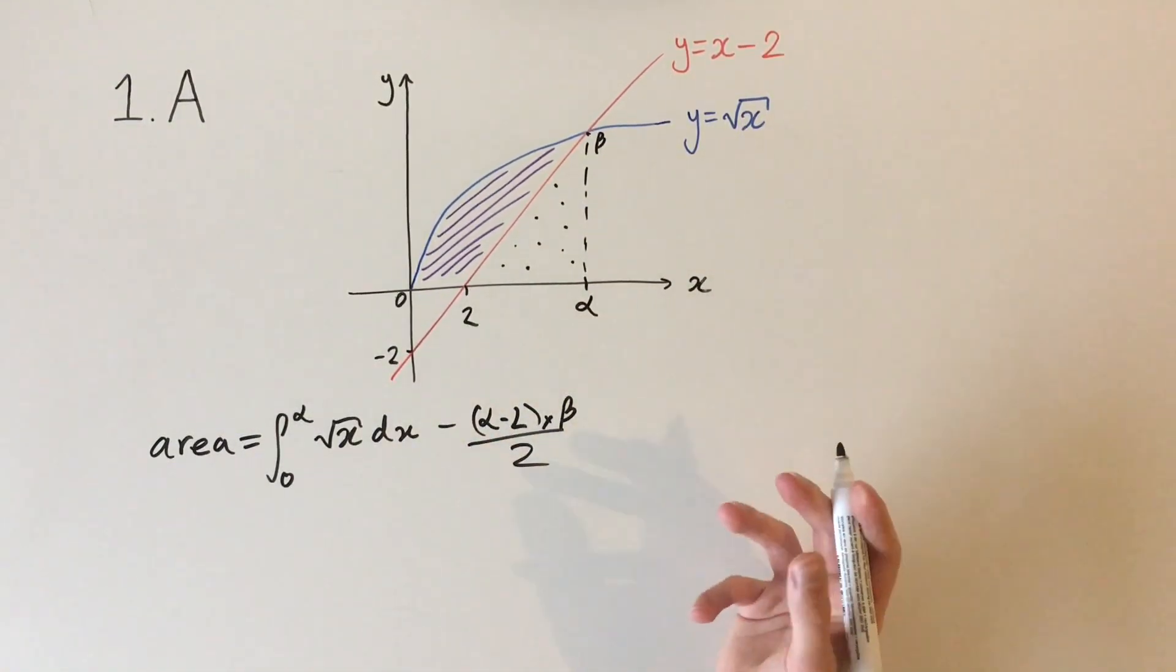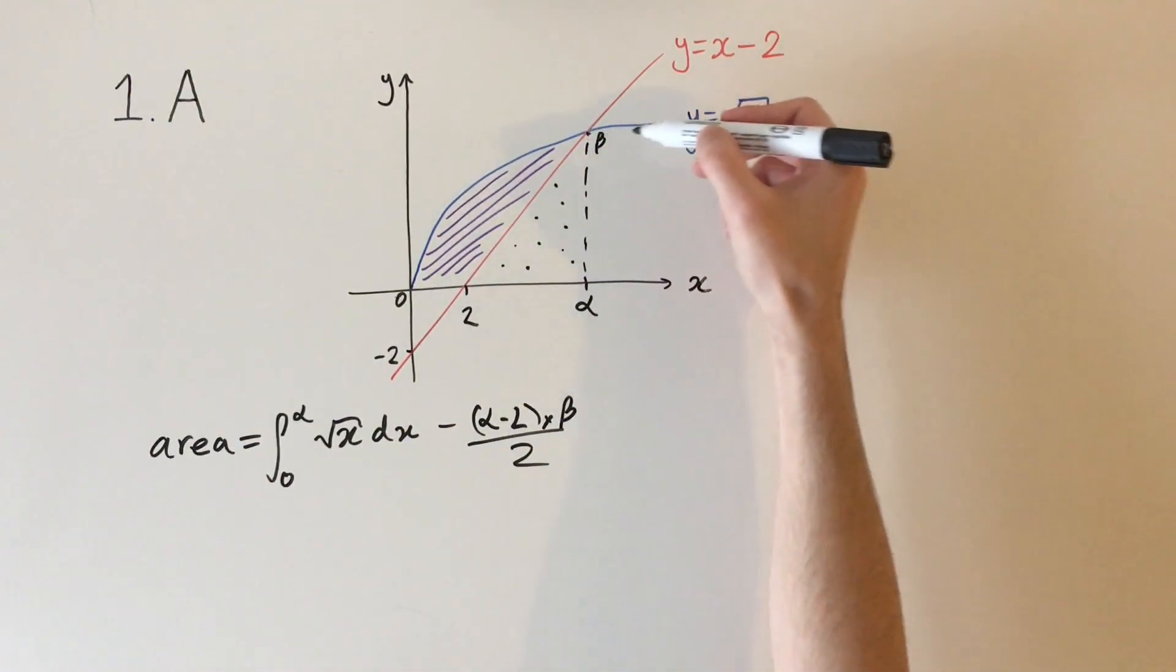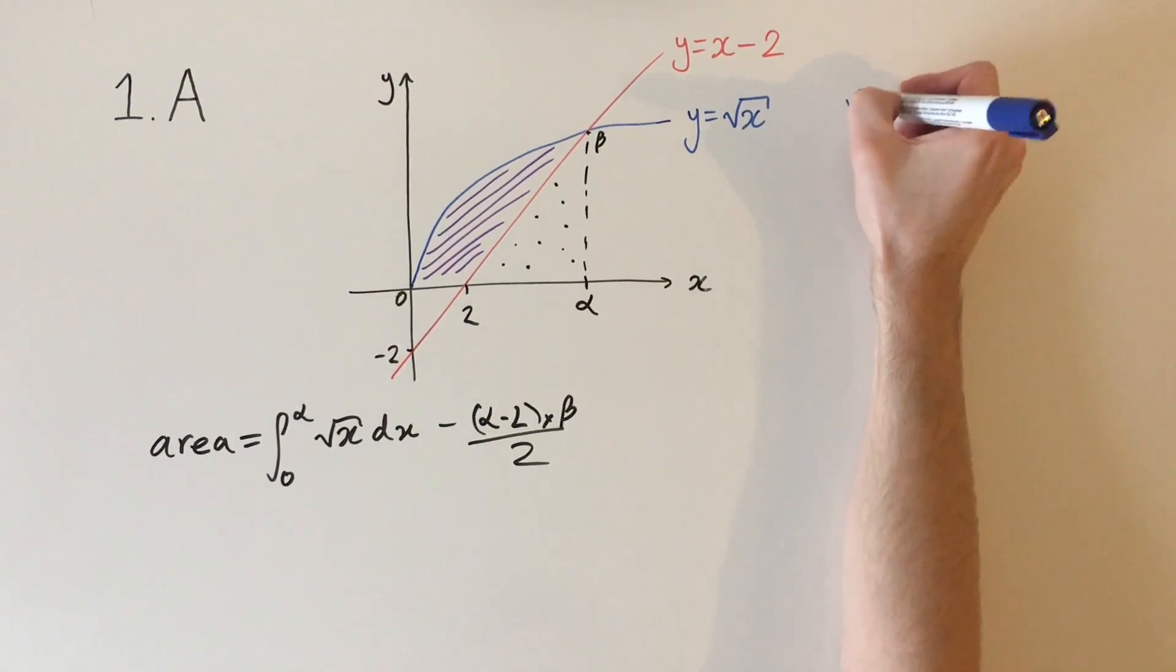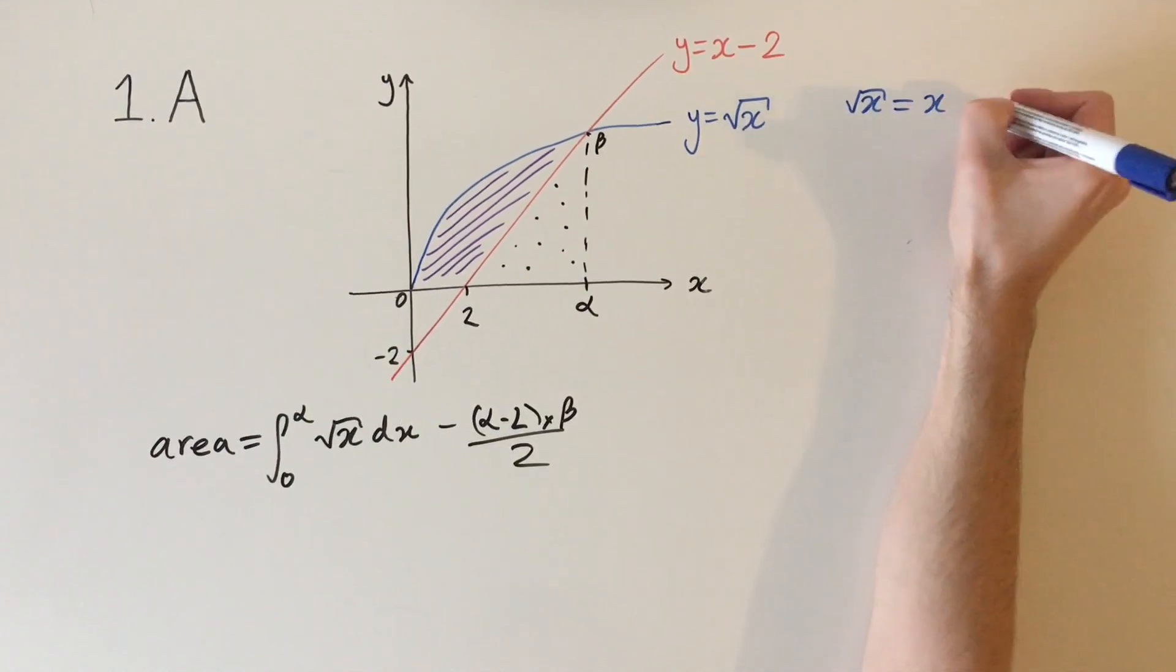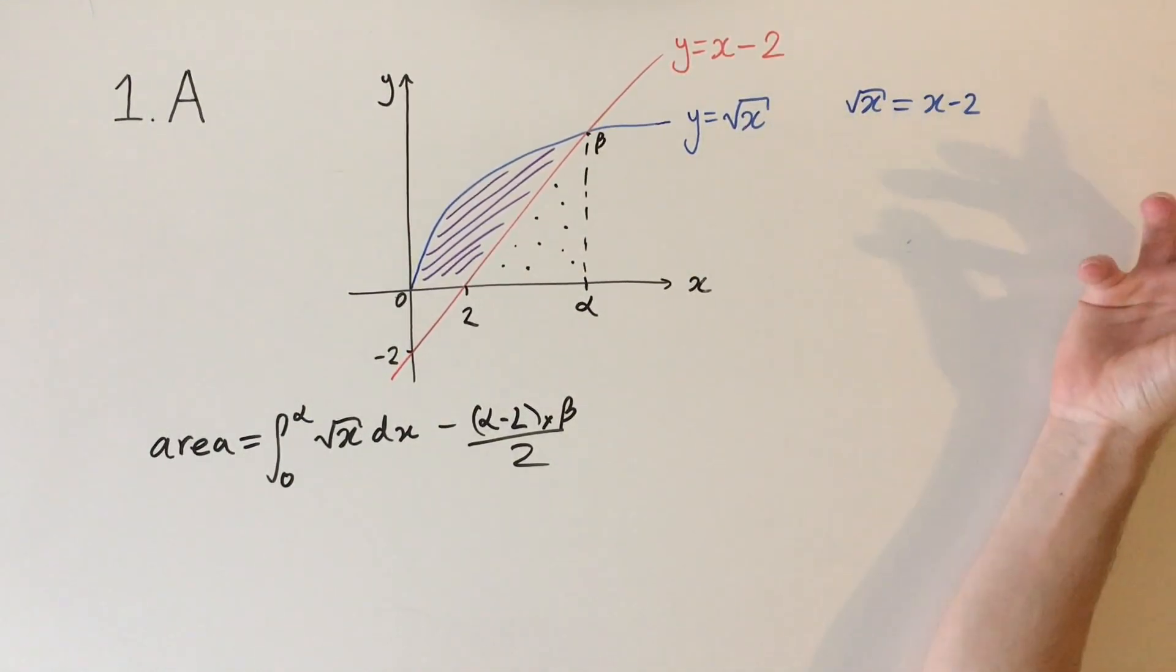So this is the answer. What's left to do is work out these coordinates alpha and beta, and we can do that by setting these two equations equal to each other. So we set the square root of x equals x minus 2, and we want to find the values of x that make this equation true.